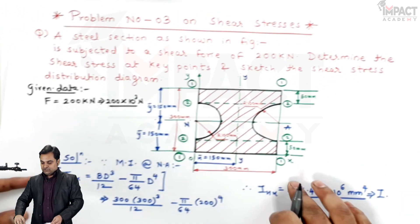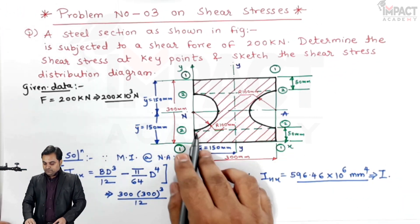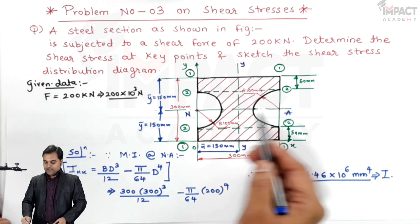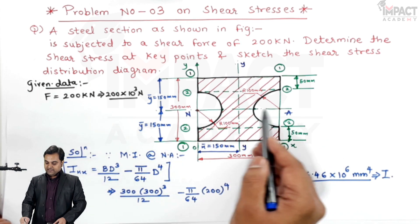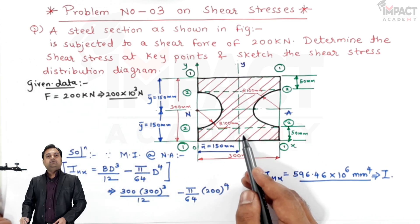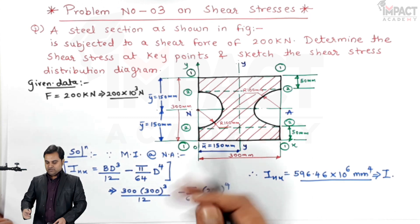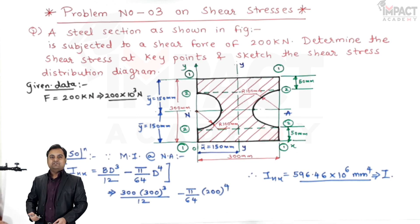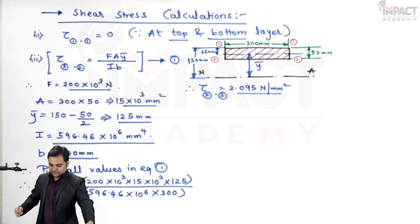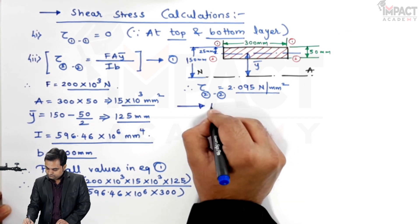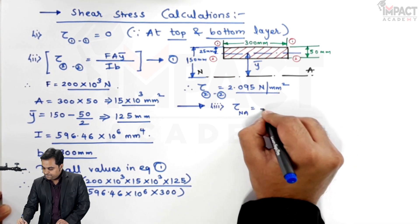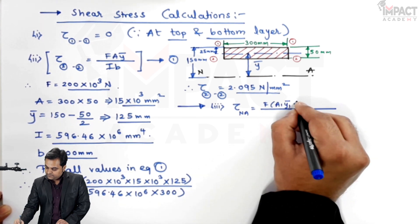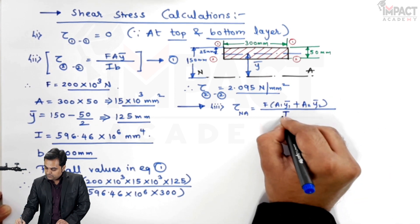The only layer remaining is the neutral axis. To calculate shear stress at the neutral axis I take the area above it. Since the section is symmetric, both halves are equal. The formula here is tau = F·(A1·y1-bar + A2·y2-bar) / (I·b), using two sub-areas: a rectangle and a semicircle.